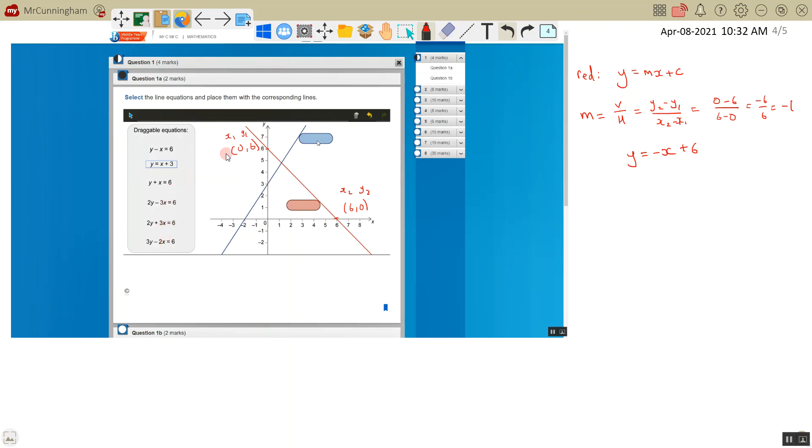Not directly, but let's rearrange a couple of these. Take this first one: y minus x equals 6. If I want to make this like y equals, I have to add x to both sides, so I get y equals x plus 6. That's not correct. y equals x plus 3, that's obviously not correct.